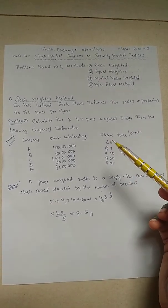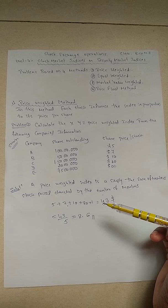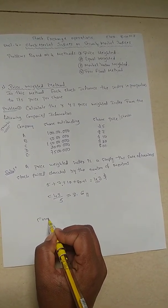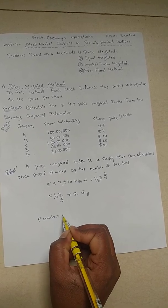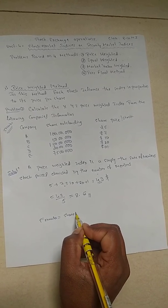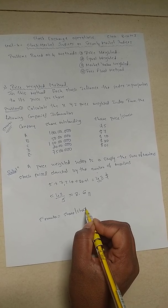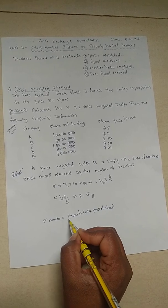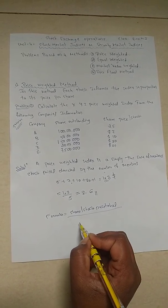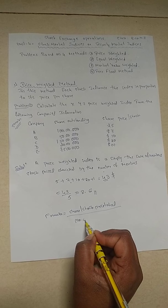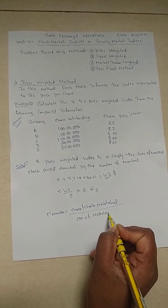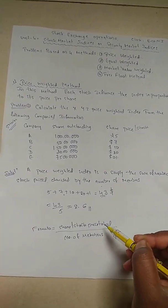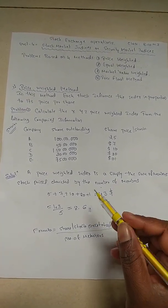This is the answer. It is very simple - we add all the stock prices and divide by the number of shares. We can write the formula: stock price total divided by the number of members. So this is our formula.